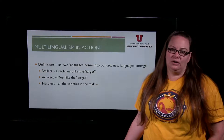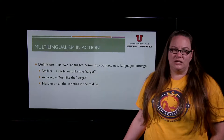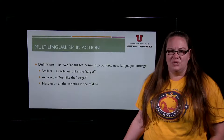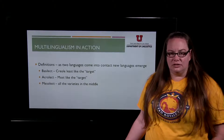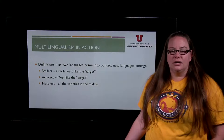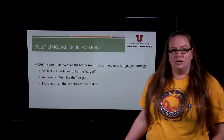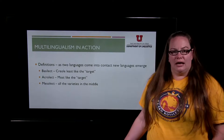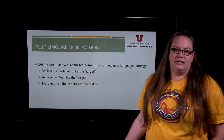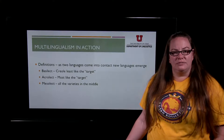A basilect is a creole that is least like the target language. Target language is a term used when learning a language, though sometimes people don't actually want to be learning it. When English comes to somewhere like Nigeria, people try to speak English or combine it with their local dialect, and a creole emerges as children learn it. The basilect is the variety least like the English that first appeared — whether British or American English. The acrolect is the creole most like that target English.